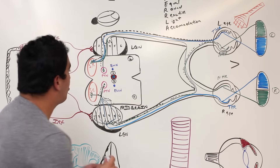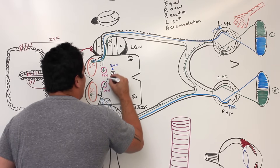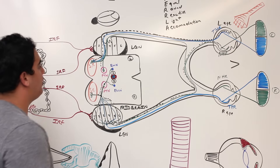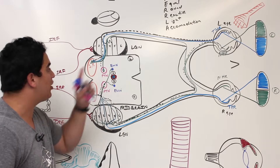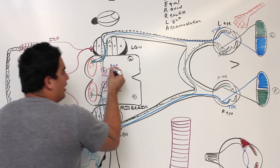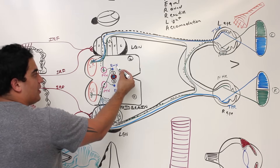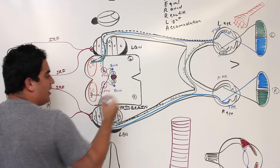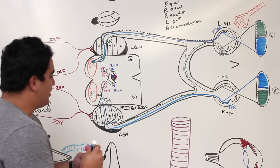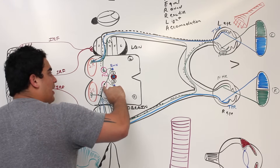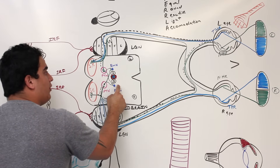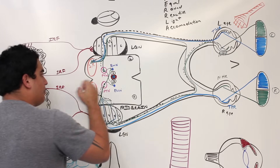What makes the pretectal nucleus special is that it can cross fibers to both sides, giving bilateral control. Each pretectal nucleus sends fibers to both the ipsilateral and contralateral Edinger-Westphal nuclei, so both EW nuclei are activated simultaneously.